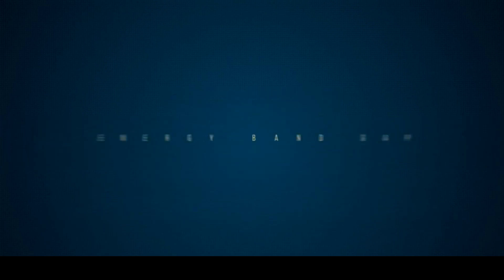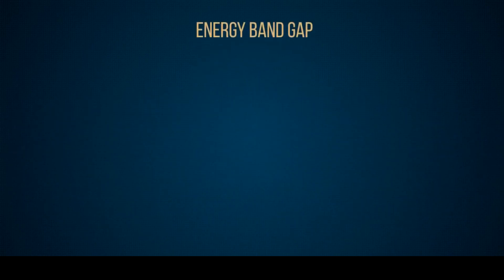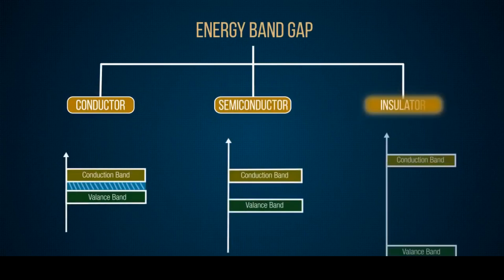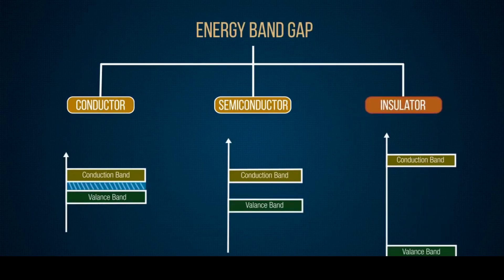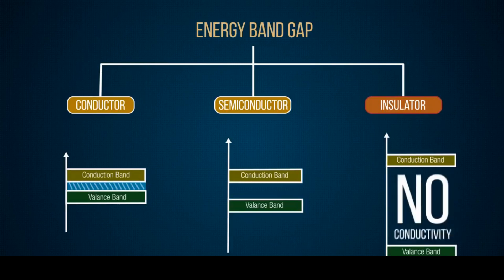Energy band gap. The band gap indicates whether the substance is a conductor, semiconductor, or an insulator. A very large band gap purely indicates that the substance is an insulator, because it takes a huge amount of energy for the electrons to jump from the valence band to the conduction band. Hence, there will be no conductivity.